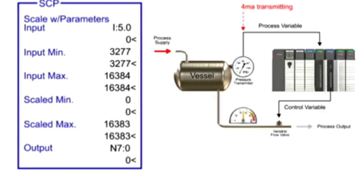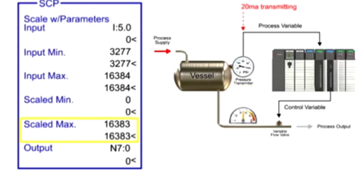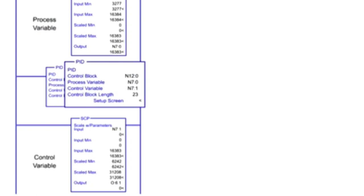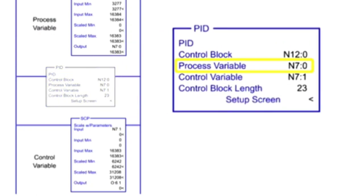For example, when the minimum pressure of 0 PSI is measured, a scaled value of 0 is transferred to the SCP output, and when 100 PSI is measured, a scaled value of 16,383 is transferred to the SCP output. In the PID instruction, the process variable parameter is programmed as an integer file, which is the scaled value from the SCP instruction.